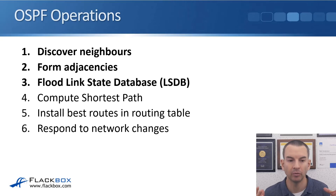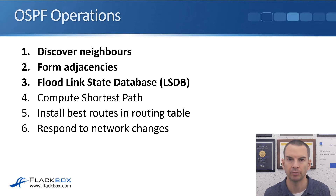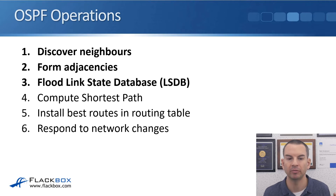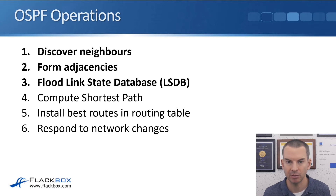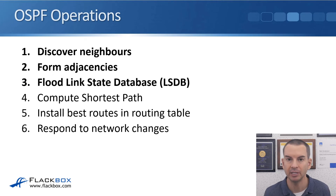In this lecture you'll learn how OSPF routers form adjacencies with each other and build their link state databases. Starting with a recap of OSPF operations: when you enable OSPF on a router, it will discover its OSPF neighbors, form adjacencies with them, and build the link state database containing all networks learned via OSPF. It computes the shortest path to each network, installs the best routes in its routing table, and responds to network changes. We'll focus on the first three: discovering neighbors, forming adjacencies, and building the link state database.